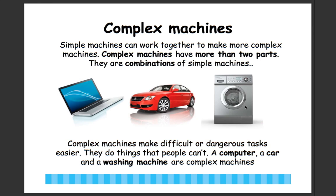A computer can compute, transfer, or translate information faster than a human in many cases. A car can get people places faster than walking or riding a bike. And the washing machine washes clothes faster and more efficiently than humans. So they all make life and work a bit easier.